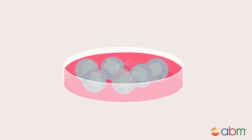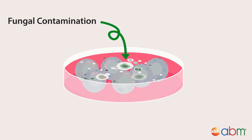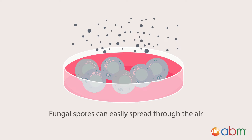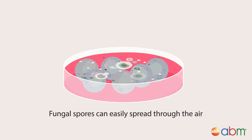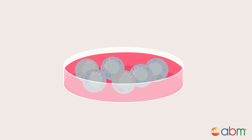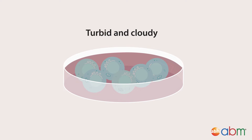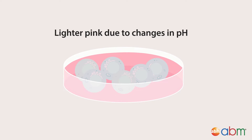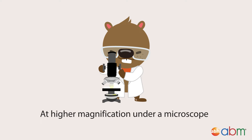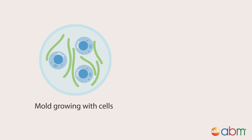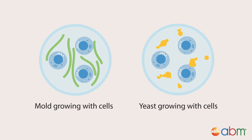If you see small gray, white, or greenish colonies floating at the surface of your medium, you've got fungal contamination. Fungi can spread easily through the air in their spore form until they find suitable growth conditions. If fungal contamination is full-blown, your medium will become turbid and cloudy and may start to change color, becoming a lighter pink due to changes in pH. At higher magnifications under a microscope, you'll also notice long fiber-like structures growing among your cells if it is mold, or clusters and chains of small round branching ovoid particles if it is yeast.